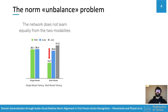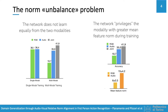In fact, performance of the RGB stream degraded when training both modalities jointly. Moreover, we notice that the modality which was privileged by the network was the one characterized by a greater mean feature norm. Thus, we brought to light the norm imbalance problem, causing the network to privilege one modality during training while penalizing the other.